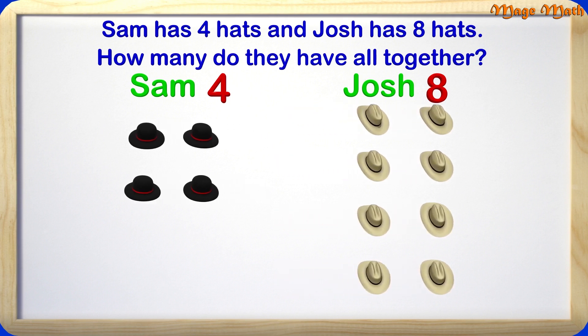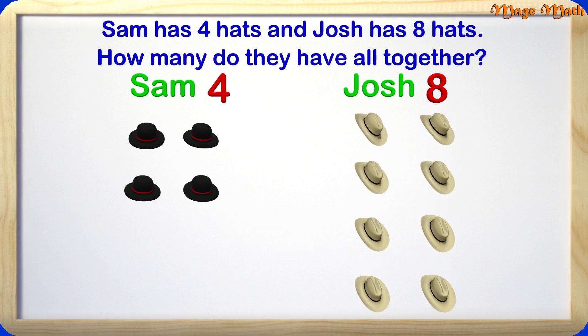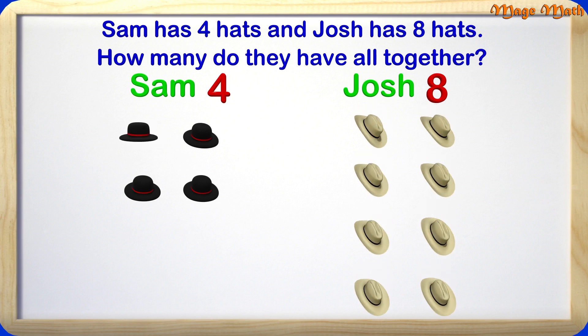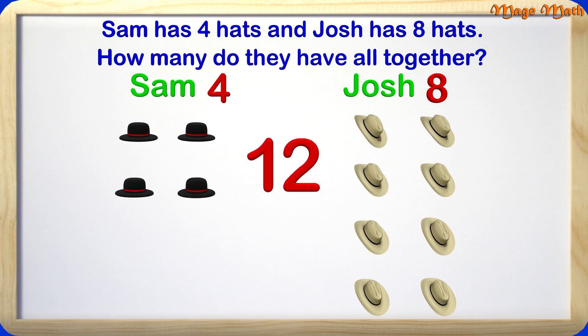We are adding Sam's 4 hats with Josh's 8 hats to find out how many we have all together. We are going to use a strategy called counting on, which means we will start with one of the groups and count up from there to count all the hats. Let's start with the group of 8 and count on: 8, 9, 10, 11, 12. There are 12 hats all together.